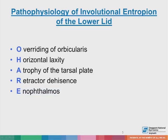The pathophysiology of involutional entropion of the lower lid — by far the commonest form — has five major components summarized by the O'HARE acronym: O referring to overriding of orbicularis, H referring to horizontal laxity, A referring to atrophy of the tarsal plate, R referring to retractor dehiscence, and E referring to enophthalmos of the globe.